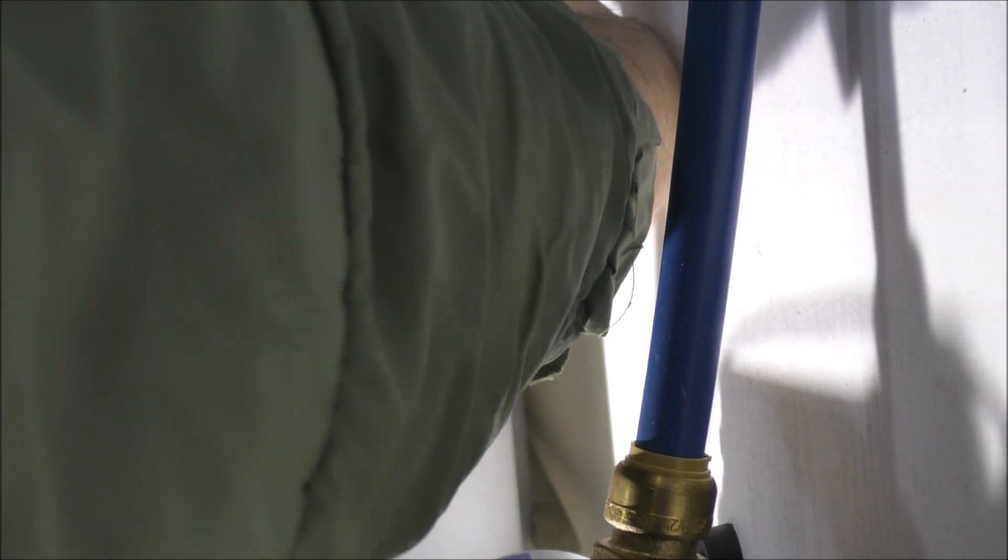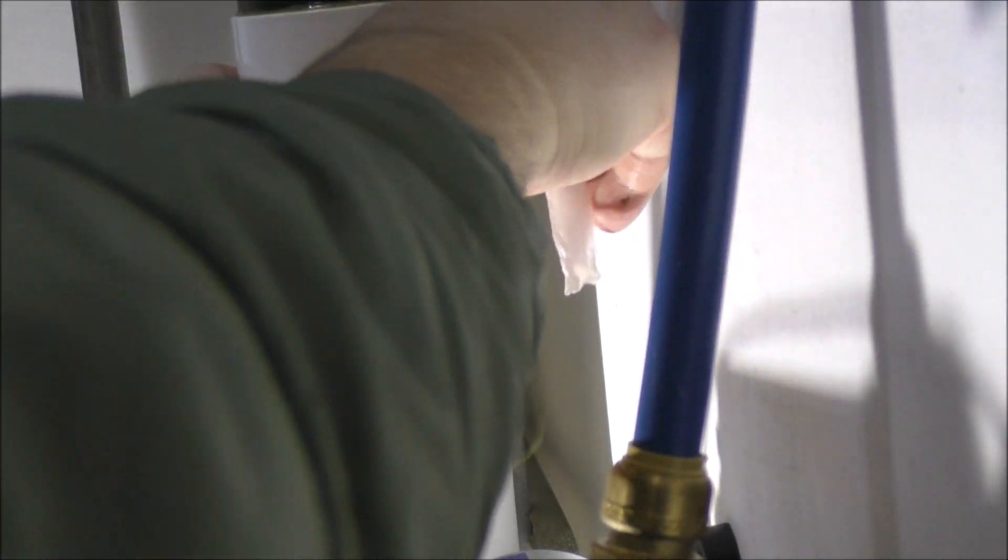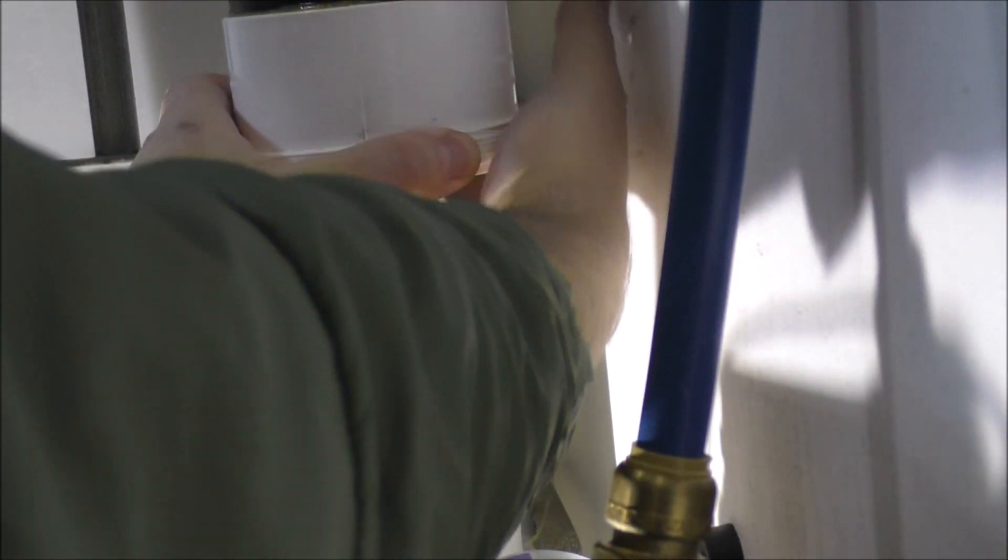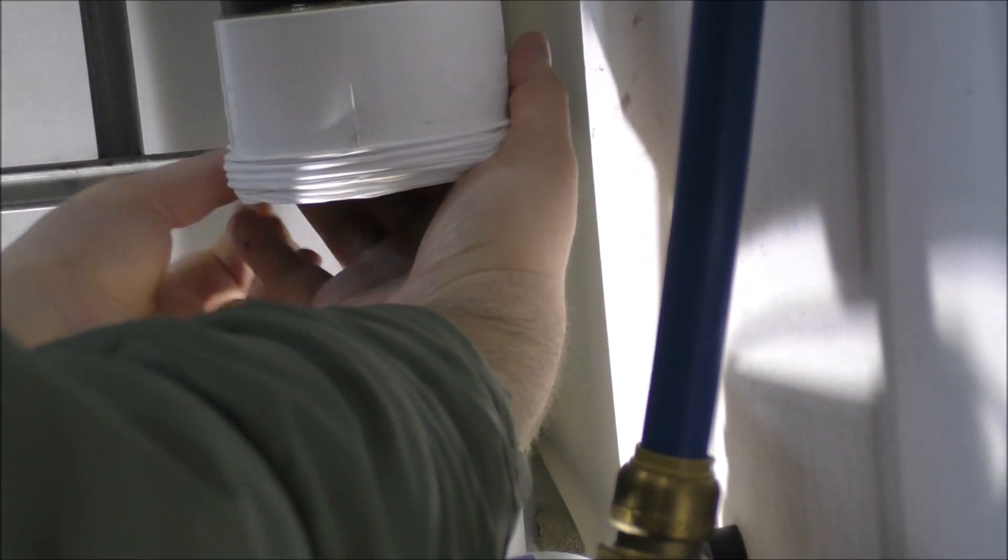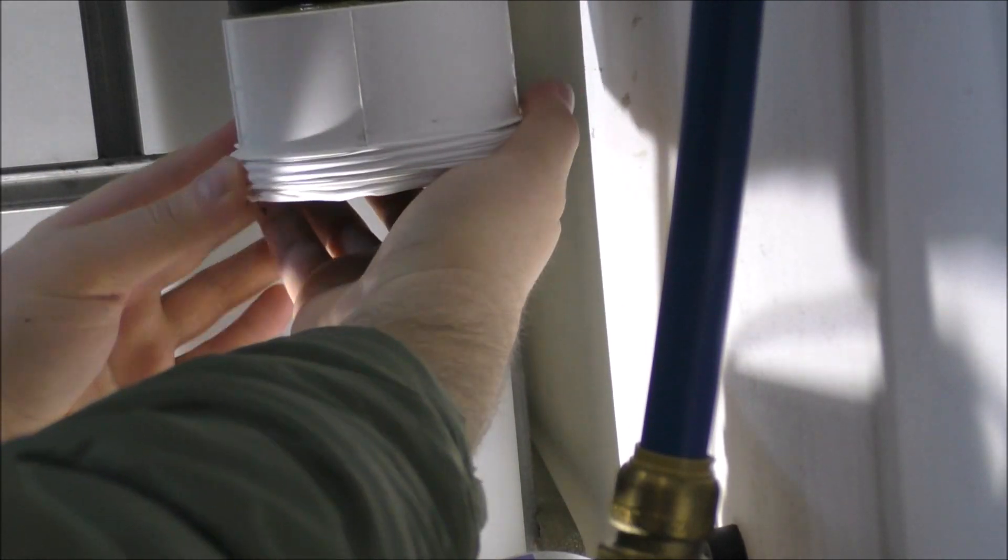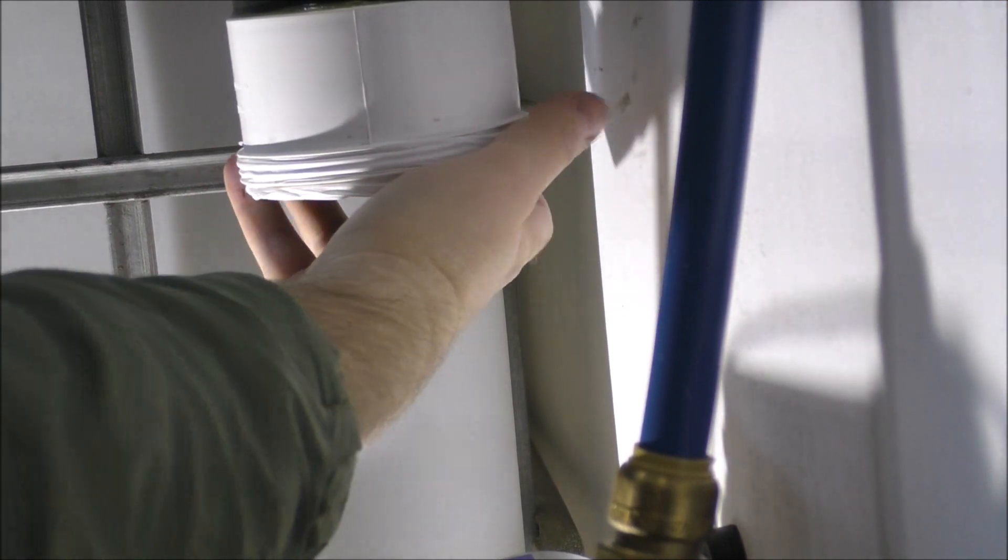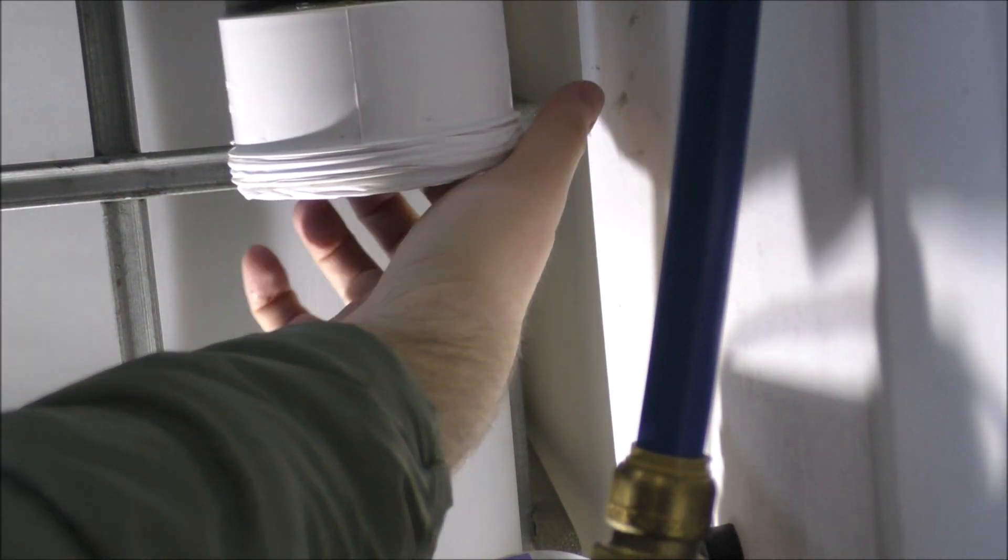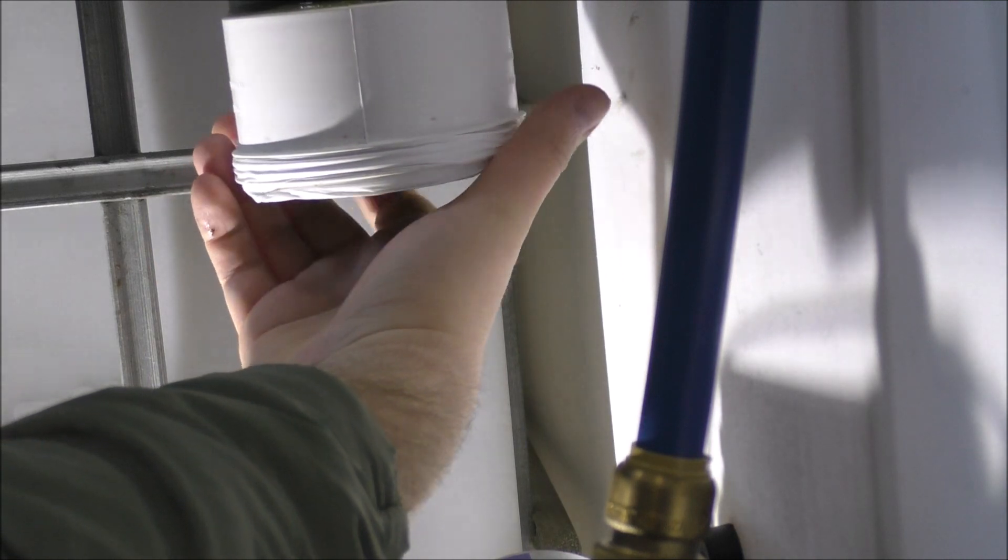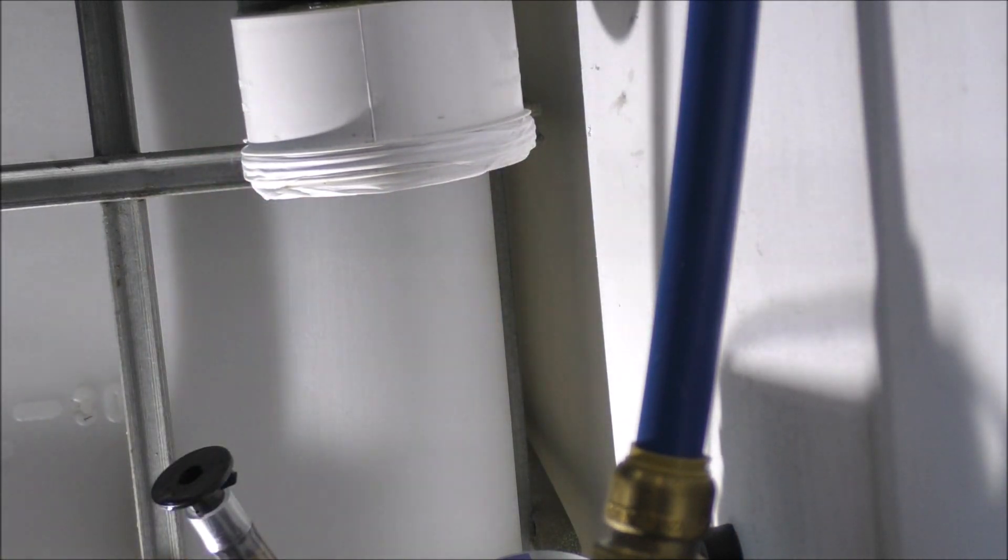Teflon is one of these things that's a forever chemical. It's in most of everybody's bloodstream because of those non-stick pans that they made with this chemical in it. And it's not a good thing. Can't get rid of it. Bodies can't process it. So, fun facts about Teflon and used in plumbing, as you can tell.